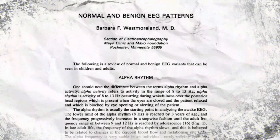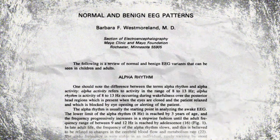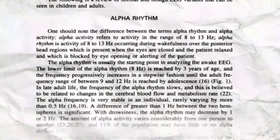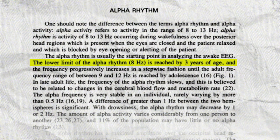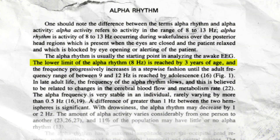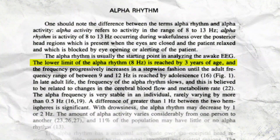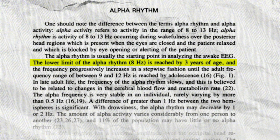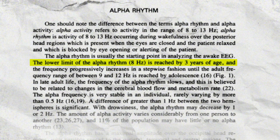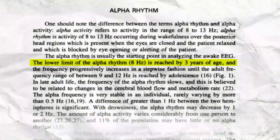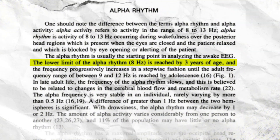According to a study published in the Clinical Neurophysiology Journal, the alpha rhythm can emerge as early as 3 years of age, typically starting at 8 Hz. This rhythm remains remarkably stable, maintaining a frequency between 8 and 12 Hz, even as we age into our later years.